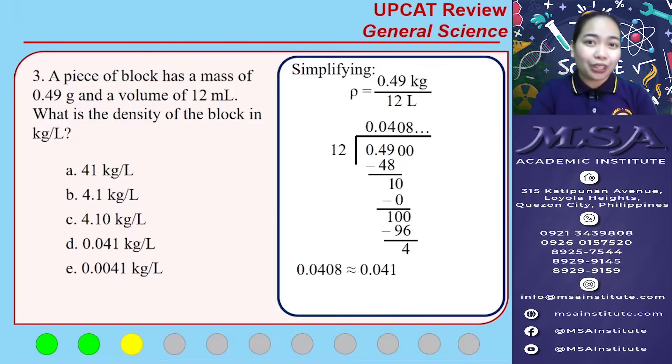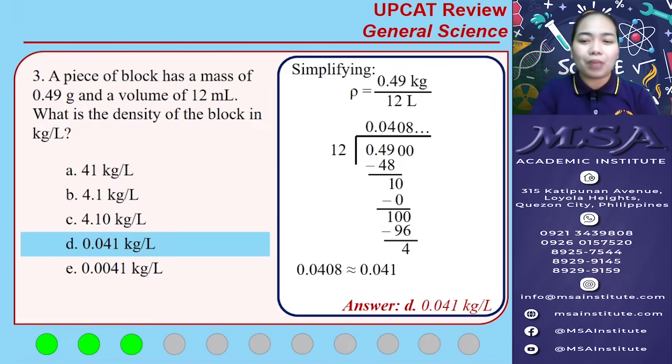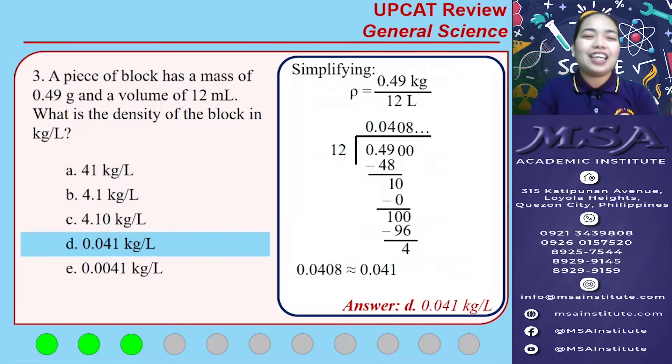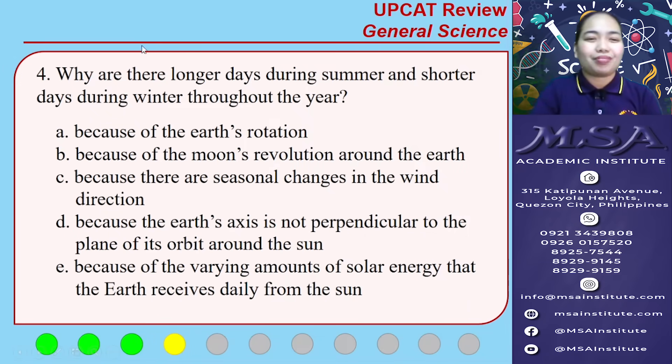If you want to verify the answer, you may proceed with the full calculation — it will give you 0.041. So for number 3, the answer is 0.041 kilograms per liter. Now let's have number 4.